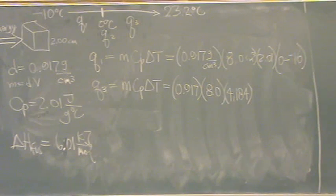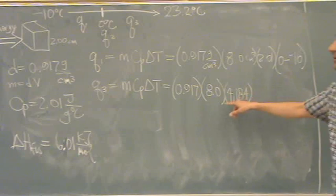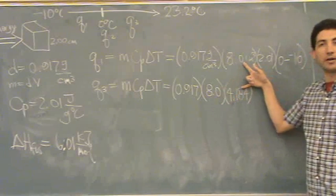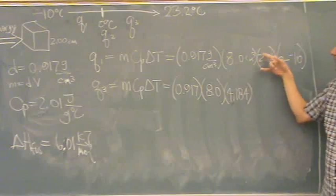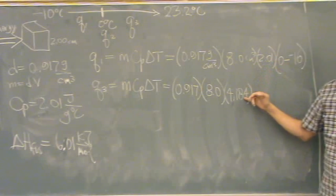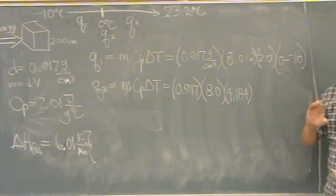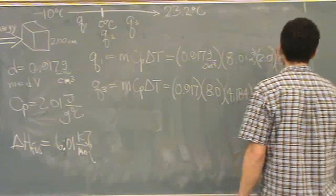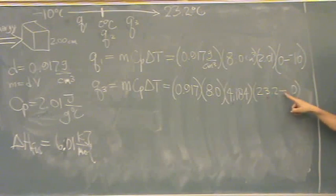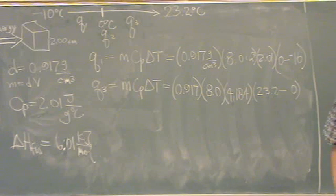Yeah, 4.184. So this time we're doing liquid water. This is why this can't be one whole thing from minus 10 to 23, because ice and water liquid have different heat capacities. See, it's 2 versus 4. If you put them all as one thing, you'd be all messed up. So they have to be separate. And this is going from 23.2 to 0, so the final is 23.2, the initial is 0.